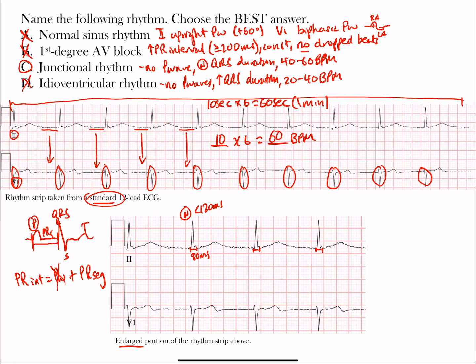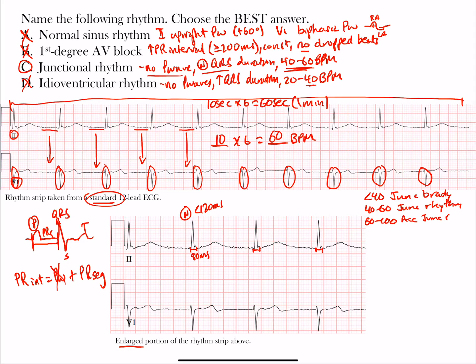The rate of approximately 60 beats per minute is clearly above the 20-40 range of idioventricular rhythm. With normal QRS duration, no P waves, and a rate around 60, this is a junctional rhythm. For context on junctional rhythm subtypes: less than 40 beats per minute is junctional bradycardia, 40-60 is junctional rhythm, 60-100 is accelerated junctional rhythm, and over 100 beats per minute is junctional tachycardia.